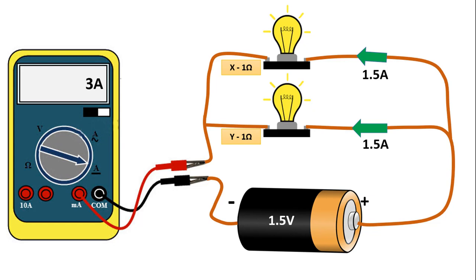This is because the path of the electrons is split. Therefore, some of the electrons pass through lamp X and some flow through lamp Y. In this example, both lamps have an equal resistance, so the current is divided equally.